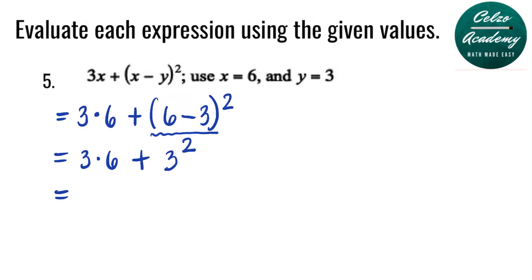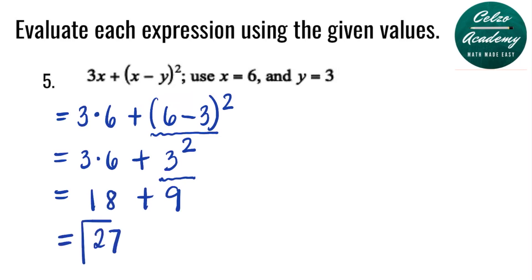Now we need to simplify the exponent: 3 to the 2nd power is 9. So we have 3 times 6 plus 9. We multiply 3 times 6, which is 18, then add 9. So the value of this expression is 27.